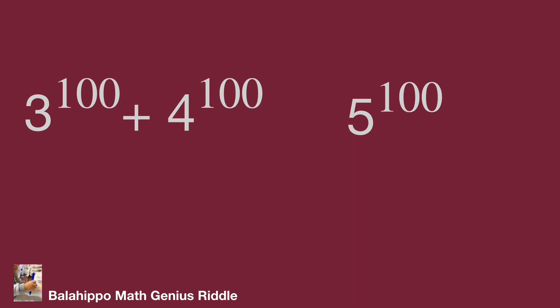These two values, 3 power 100 plus 4 power 100 and 5 power 100, how will we compare them? We may utilize subtractions. If 3 power 100 plus 4 power 100 minus 5 power 100, check the result become positive or negative to judge which value is bigger.